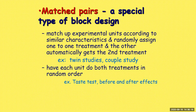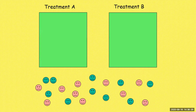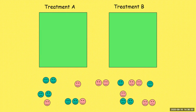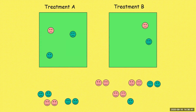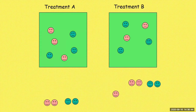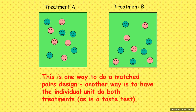Yes, you have the same person again, but you are getting two different outputs from it, and the assignment of treatments is dependent. To give you a visual of matched pairs: we group based on a common characteristic, but grouping two by two — one gets one treatment, the other gets the other. Another way is to have the individual unit do both treatments.